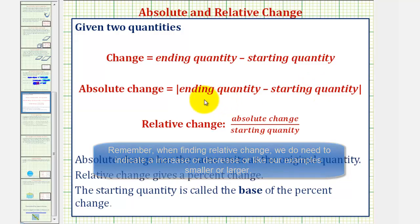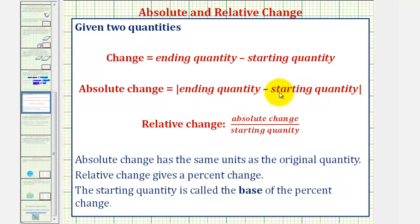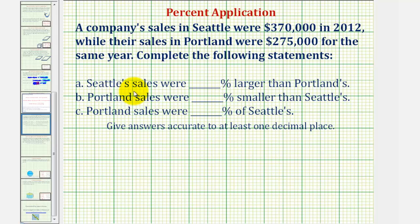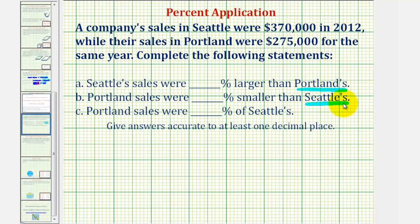In our example, we don't really have an ending and starting quantity because we're comparing sales between two cities for the same year. But we can still use this idea. For statement A, Seattle's sales were what percent larger than Portland's, so Portland's sales will be the base. In part B, we compare the absolute change to Seattle's sales, so Seattle's sales will be the base.